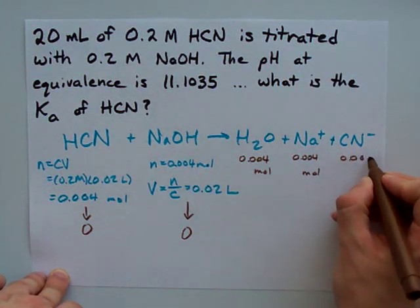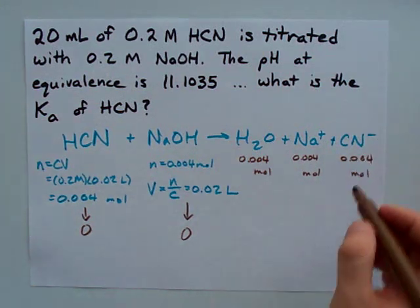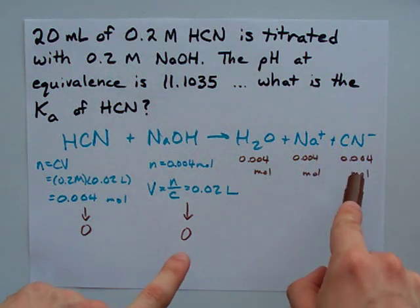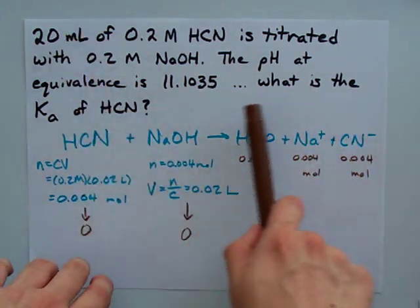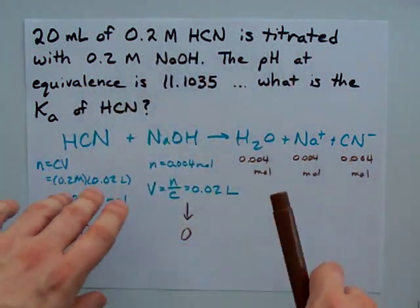And 0.004 moles of CN-. Now, that's the conjugate of a weak acid, so it will affect the pH. And it's going to be the only thing in our final solution after titration at equivalence that affects the pH.